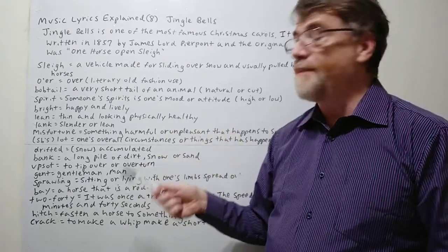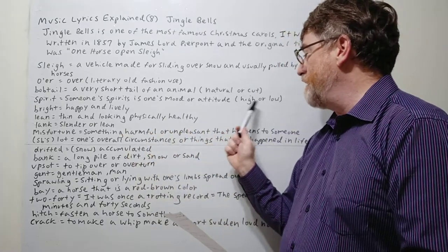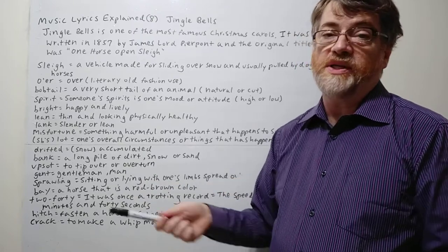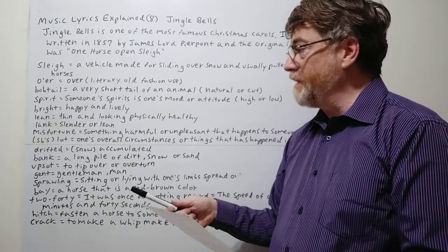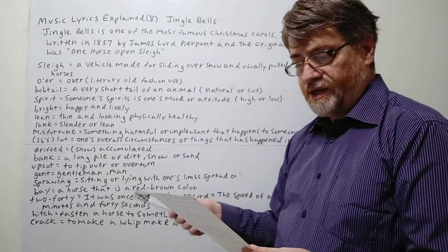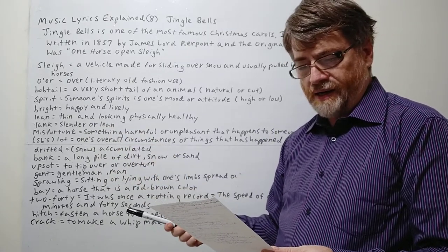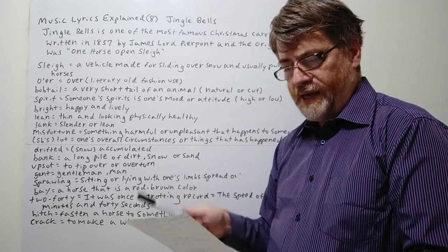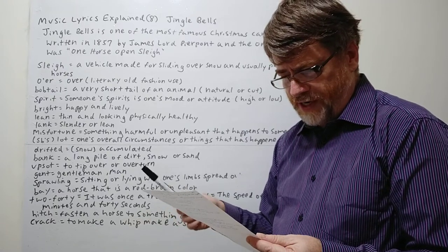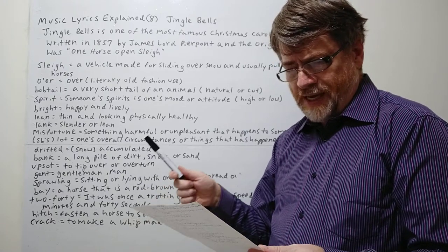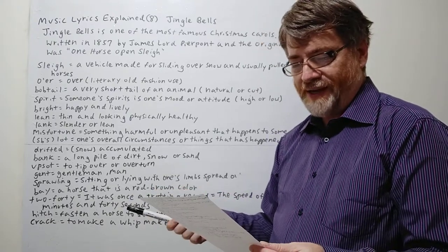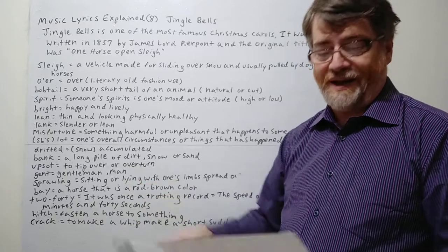Bright, of course, means happy. When you say your spirit, it could be either high or low. You could be in high spirits, which is happy, or low spirits, which is not so happy. But making spirits bright—bright here means happy and lively. So bells on bobtails ring, making spirits bright. What fun it is to ride and sing in a sleigh song tonight. So we're having fun in the sleigh riding.